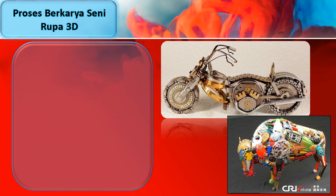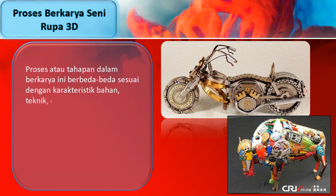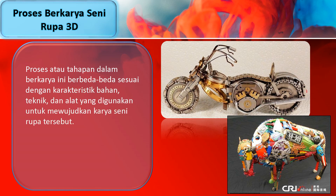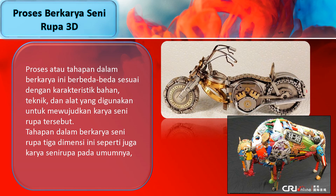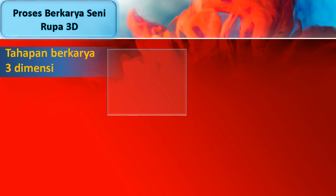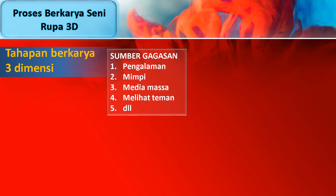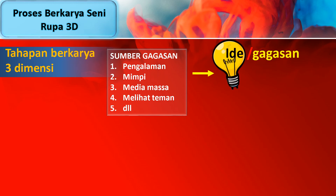Selanjutnya, proses berkarya seni rupa tiga dimensi, seperti juga karya seni rupa pada umumnya, dimulai dari adanya motivasi untuk berkarya. Tahapan berkarya tiga dimensi bisa dimulai dari sumber gagasan. Sumber gagasan bisa diambil dari pengalaman, mimpi, media massa, dan melihat teman dan lain-lain. Kemudian setelah sumber gagasan, muncullah sebuah ide atau gagasan sendiri. Dari ide gagasan, kemudian munculkan sebuah wujud global atau sketsa karya itu sendiri.